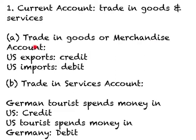Let's look at the merchandise account first. Suppose the US exports wheat to Japan. When the US exports wheat to Japan, it receives money from Japan, so US exports will be recorded as a credit side entry into the US BOP. For Japan's BOP, it will be a debit side entry, because Japan is paying the US money. Similarly, when the US imports goods, it has to pay money to foreigners, so US imports will be recorded as a debit side entry.